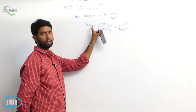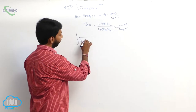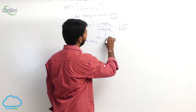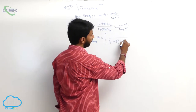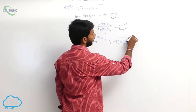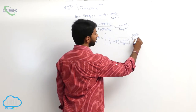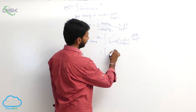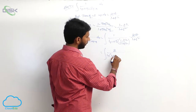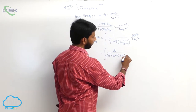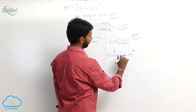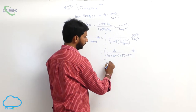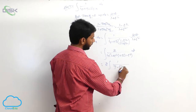Substitute the values of dx and cos x. The integral of 1 by (4 plus 5 cos x) dx equals integral of 1 by [4 plus 5 of (1 minus t square) by (1 plus t square)] times 2 dt by (1 plus t square). After taking LCM, we get 2 by [4(1 plus t square) plus 5(1 minus t square)]. After simplification, this becomes integral of 1 by (9 minus t square) dt.